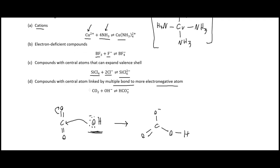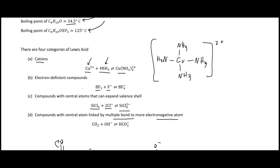Those are the four categories of Lewis acids. This was a quick introduction to the ways we can think about acid and base chemistry. There is also the Usanovich concept, but it's far too general — it includes redox reactions in acid-base chemistry and essentially turns every possible chemical reaction into an acid-base reaction, making it unhelpful. So I'm not going to cover it here.